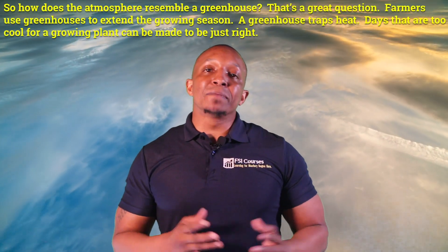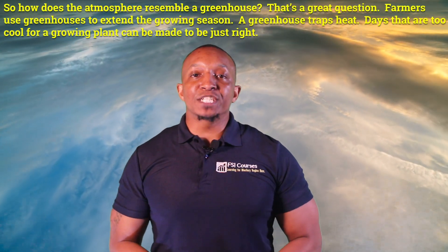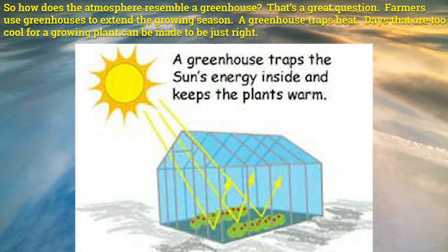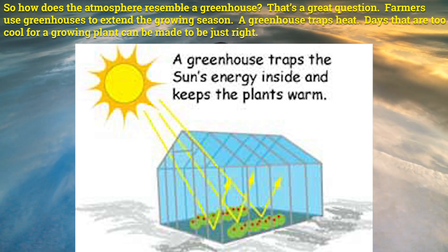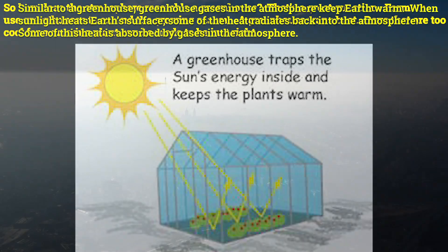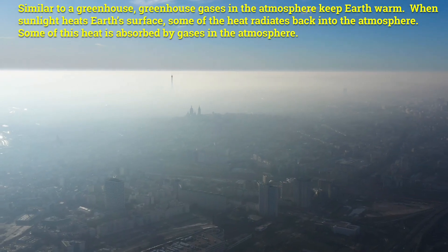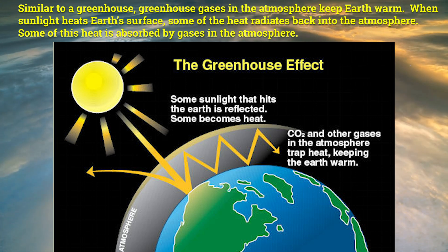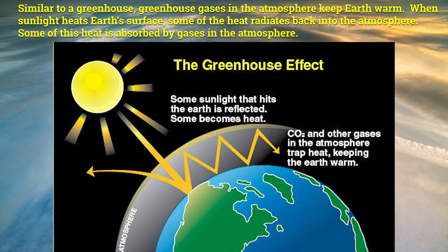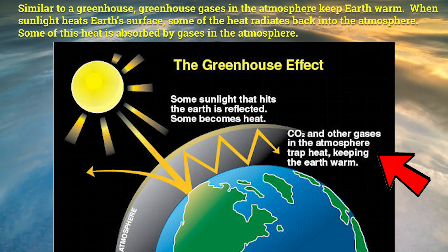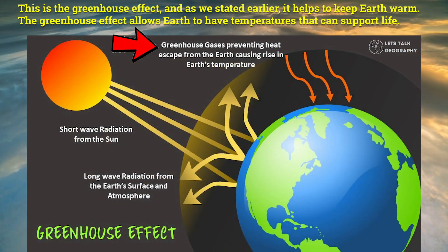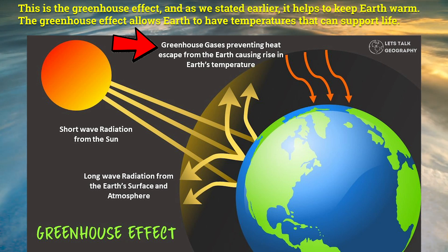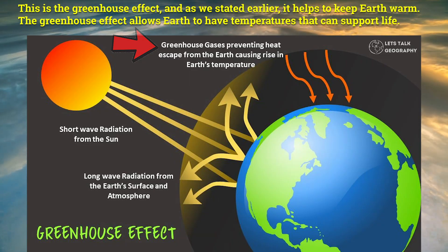So how does the atmosphere resemble a greenhouse? Farmers use greenhouses to extend the growing season. A greenhouse traps heat — days that are too cool for a growing plant can be made to be just right. Similarly, greenhouse gases in the atmosphere keep Earth warm. When sunlight heats Earth's surface, some of the heat radiates back into the atmosphere and is absorbed by gases there. This is the greenhouse effect, and it helps keep Earth warm, allowing temperatures that can support life.